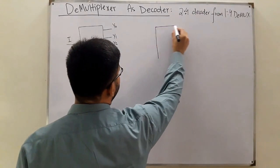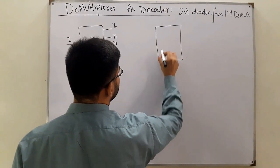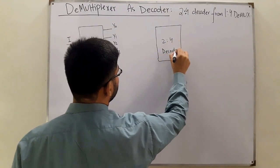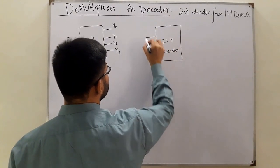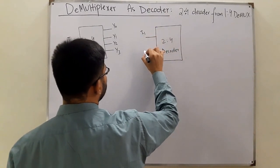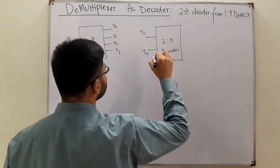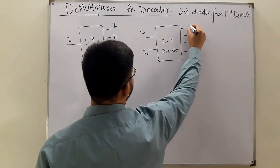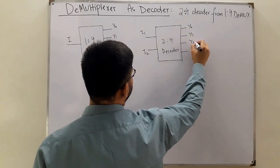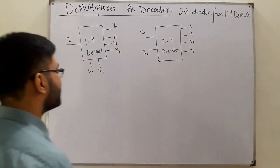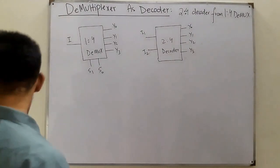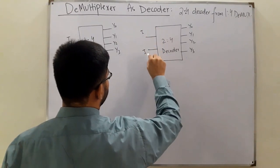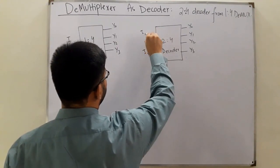The outputs are represented by Y0, Y1, Y2, and Y3. Now in the 2x4 decoder, you have two input lines—let's say I0 and I1—and four output lines: Y0, Y1, Y2, Y3.